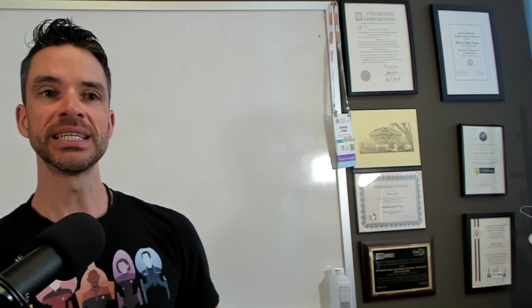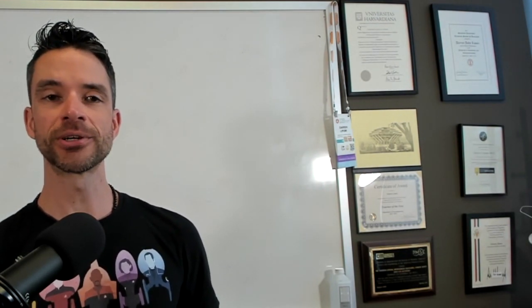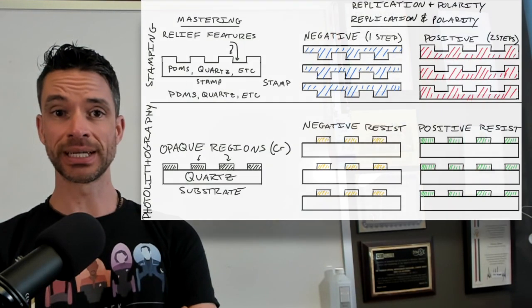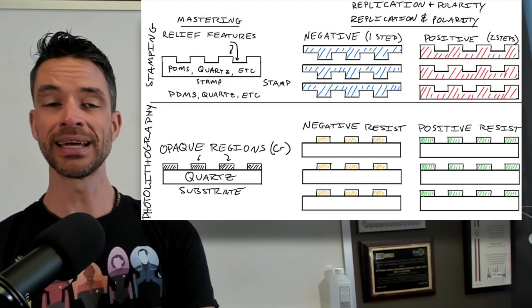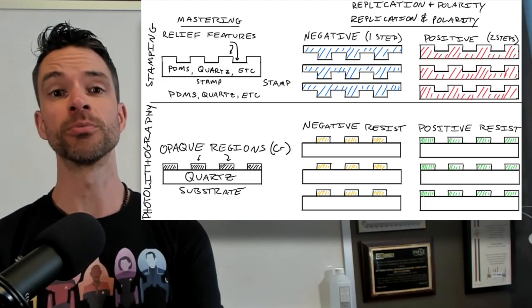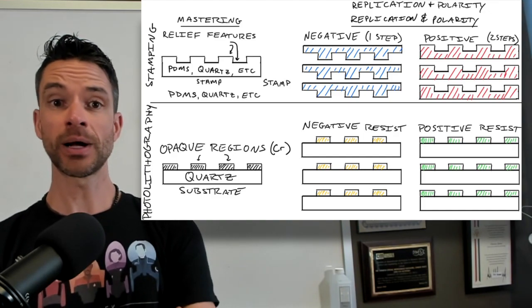Fabrication comes in two different flavors. There are two different steps. There is a mastering step, which is where you make new nanoscale information in a form from which it can be replicated.